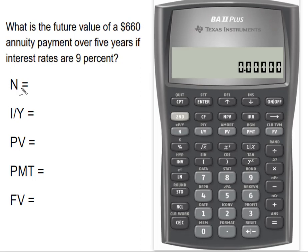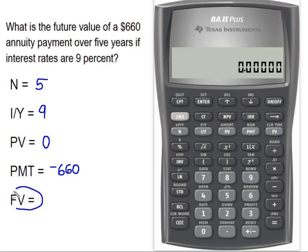We'll gather together the information that we need for our calculator. We know that we have a period of five years. The interest rate is 9%. Our present value is going to be zero, because remember when we start out, that first payment isn't received until the end of the period. And our payment is going to be entered as a negative $660. We're going to compute that future value using these time value of money keys.